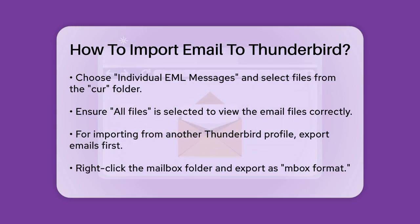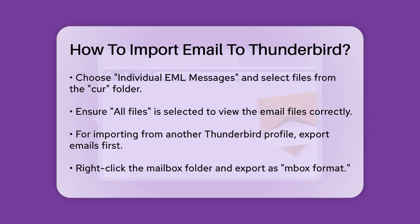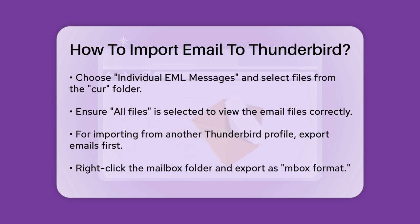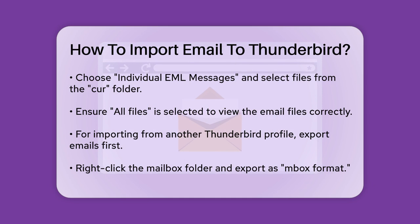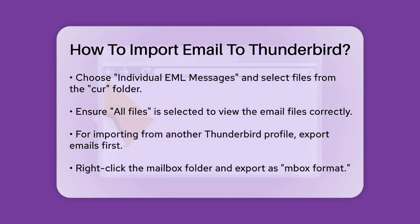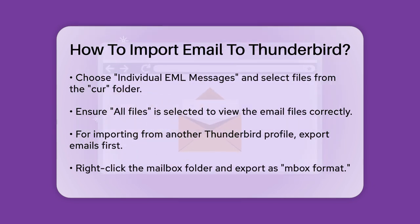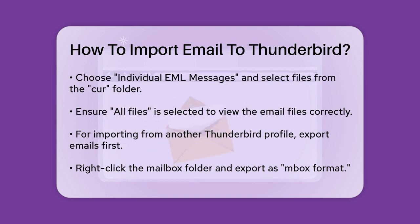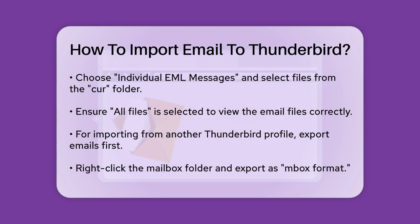Next, open Thunderbird on the other system, install the Import Export Tools NG extension if it's not already installed, and then select Local Folders. Right-click and choose Import Export Tools NG, Import Mbox Files. Select the Mbox file you saved earlier and click Open.